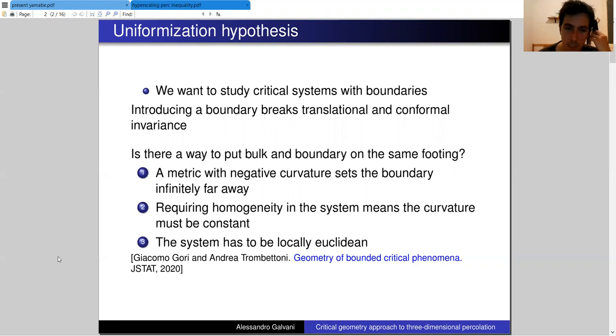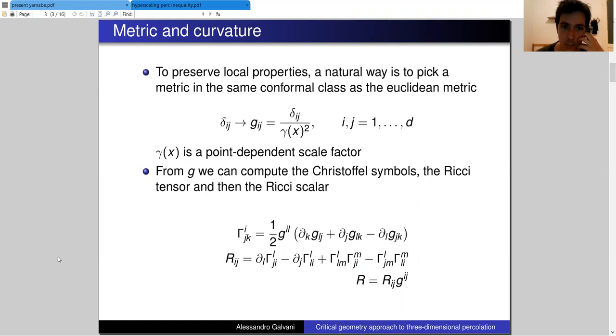The main property that we'd like our system to have is to be uniform in some sense, so we have to define what we mean by this uniformization. Another fundamental property is that as long as we look at the system from quite close, it still has to be at least locally Euclidean, because local properties have to be preserved.